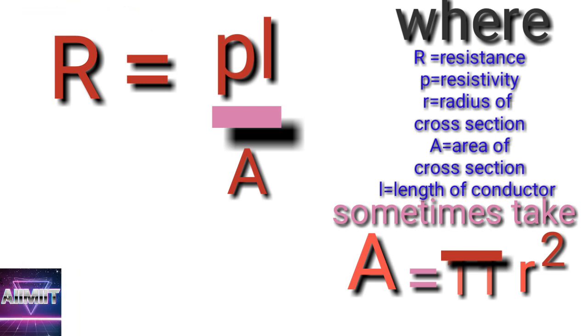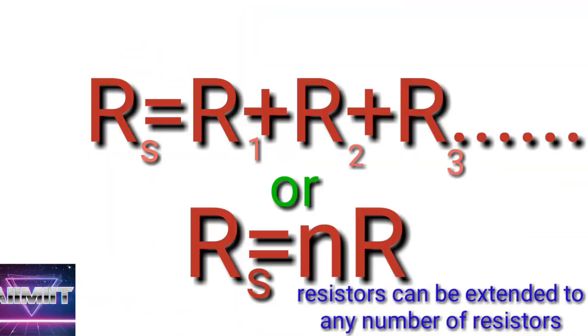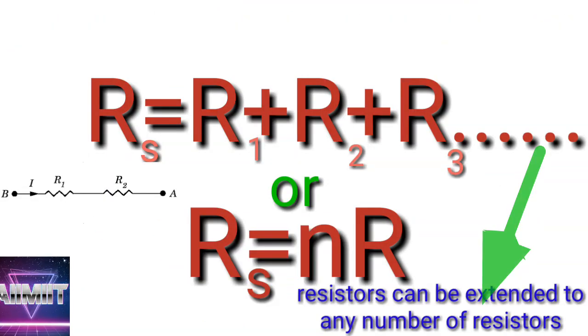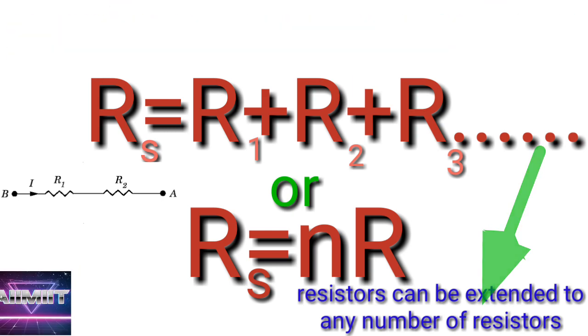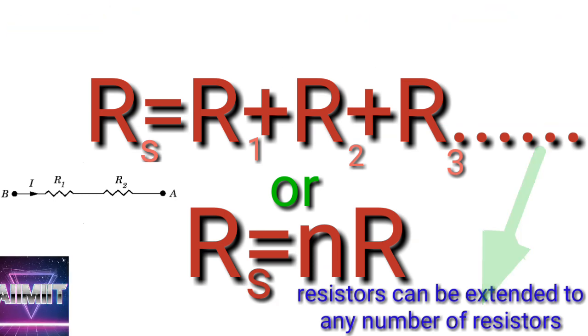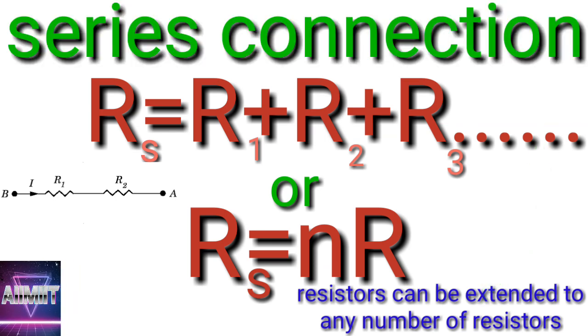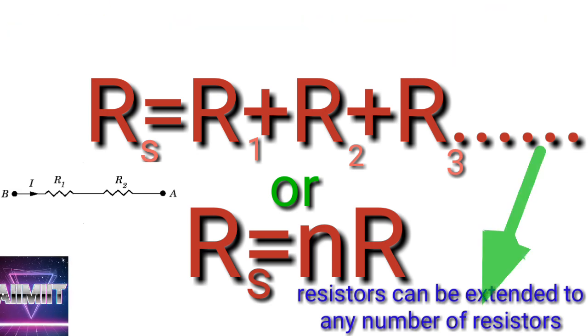Number six: Total resistance or effective resistance in series combination is given as Rs = R1 + R2 + R3. We can extend it to any number of resistors given. Or if all the resistors are same, you can also use the formula Rs = nR if all of them are same only.